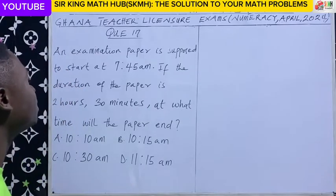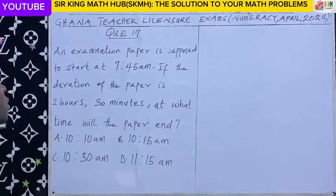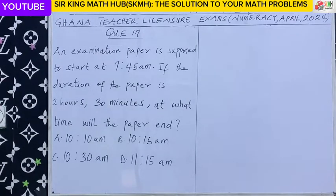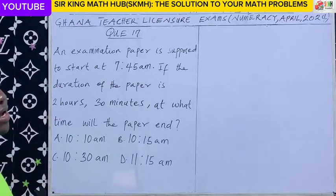Question 17. An examination paper is supposed to start at 7:45am. If the duration of the paper is 2 hours 30 minutes, at what time will the paper end?